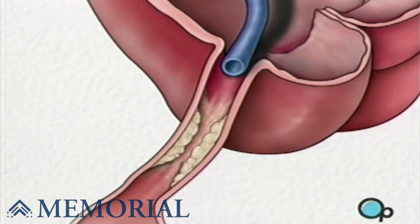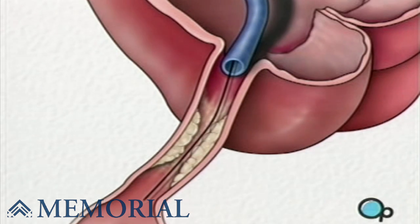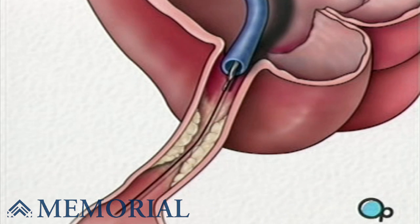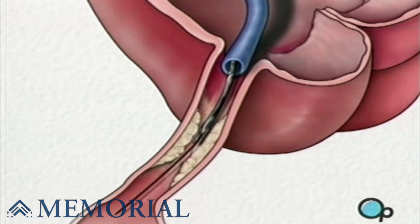Once the restricted area has been identified, a thin wire is inserted into the catheter and is guided all the way to the blocked area and then slightly beyond. This wire acts as a guide for the balloon catheter. It allows your doctor to position the deflated balloon precisely in the middle of the narrowest part of the coronary artery.